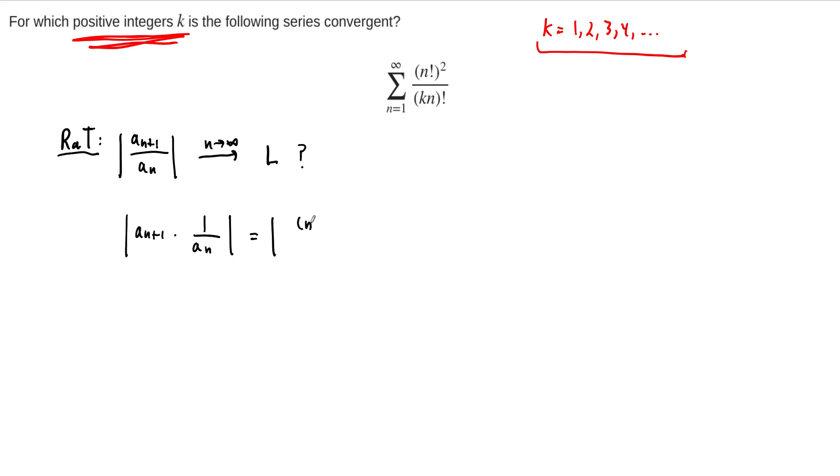So when we swap out n for n plus 1, this looks like n plus 1 factorial squared. So I'm going to write it out two times: n plus 1 factorial, n plus 1 factorial. And then on the bottom, this is going to be k times n plus 1, the whole thing, factorial.